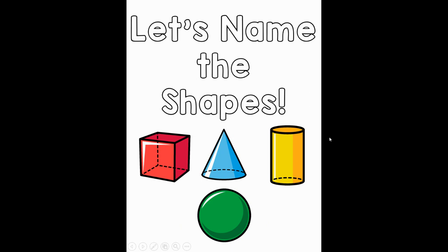So boys and girls, now that we have learned the names of four different 3D shapes, let's go ahead and say them one more time. The first shape is called a cube. The next shape is a cone. The third shape is called a cylinder. And the shape on the bottom is called a sphere. I hope that this video helped you learn about 3D shapes and I hope that you enjoy the choice board activity.